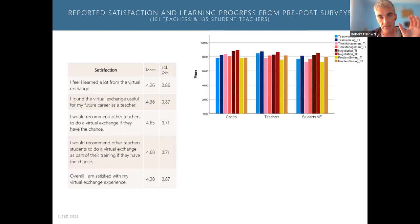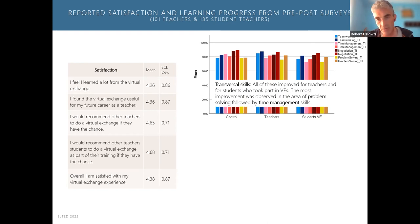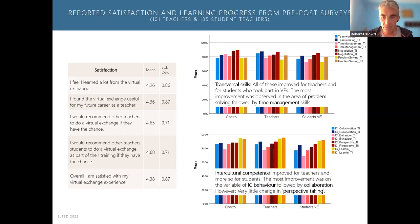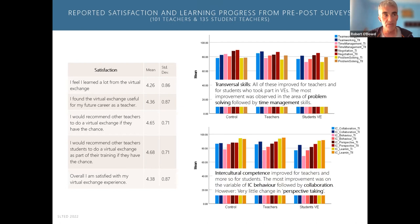We've also got initial findings from this round as regards transversal skill development. All of these skills were seen to be improved by teachers and students who took part. The most improvement was observed in the areas of problem solving, followed by time management skills — these are the skills teachers and students report most developing. The same with intercultural competence — improvement was seen for both teachers and students, even more so for students. The most improvement was under the variable of IC behavior, followed by collaboration. However, we're noticing there's very little change in perspective taking — why do students find it hard to develop empathy and understand other people's perspectives in virtual exchange?